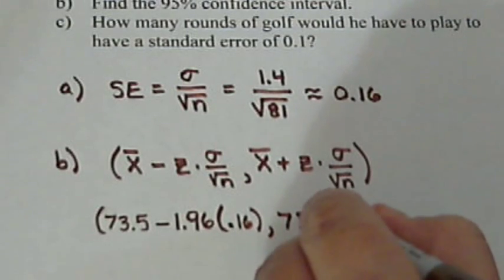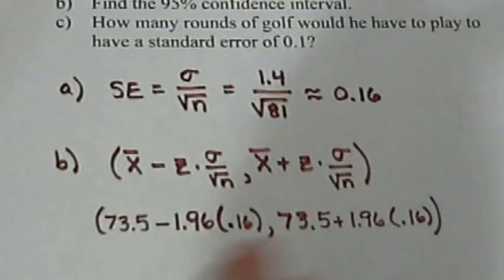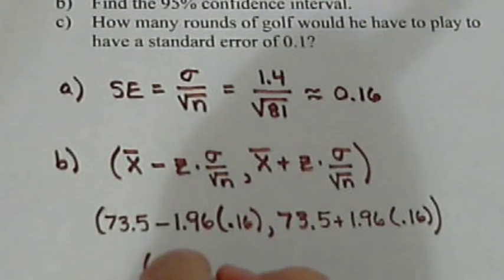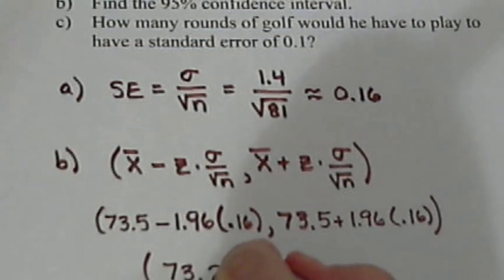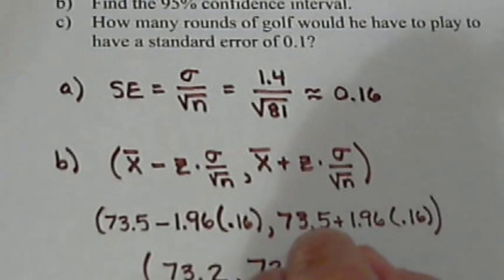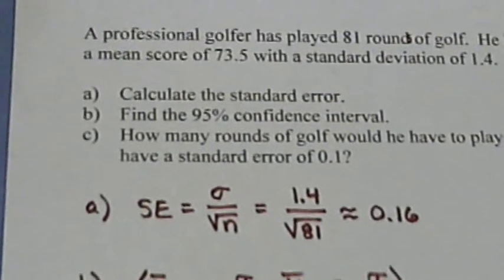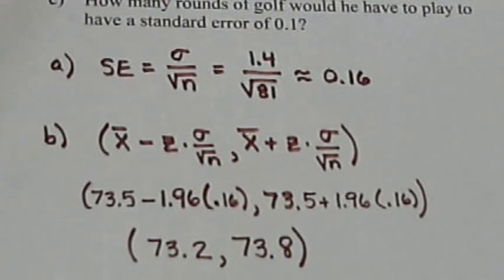Then we have the same thing on the opposite side with a plus. So then if we calculate these numbers, on the left hand side we get about 73.2. So if we're trying to find the actual mean of this golfer, based on the 81 rounds we know, he had a mean of 73.5. But what we're saying is we're about 95% sure that his actual average is somewhere between 73.2 and 73.8.